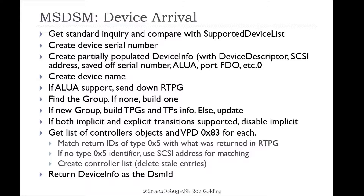Once the DSM is registered, when a device arrives, the DSM will get called during the device arrival phase. For the MS DSM, it will get the standard inquiry data, compare it with the supported device list, create a device serial number based on this information, and create a partially populated device info with device descriptors. It saves off the serial number, the LUN port and FDO, and creates a device name. If the LUN supports it, it will go to report target group and build one if it doesn't exist — building target port groups and target port info.